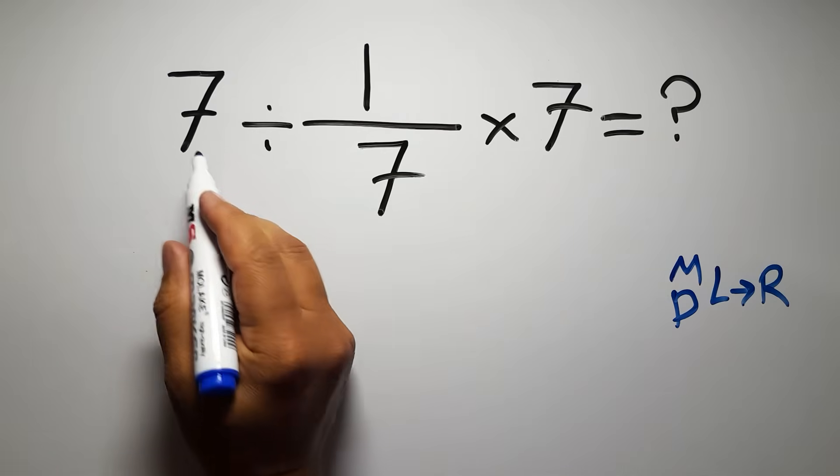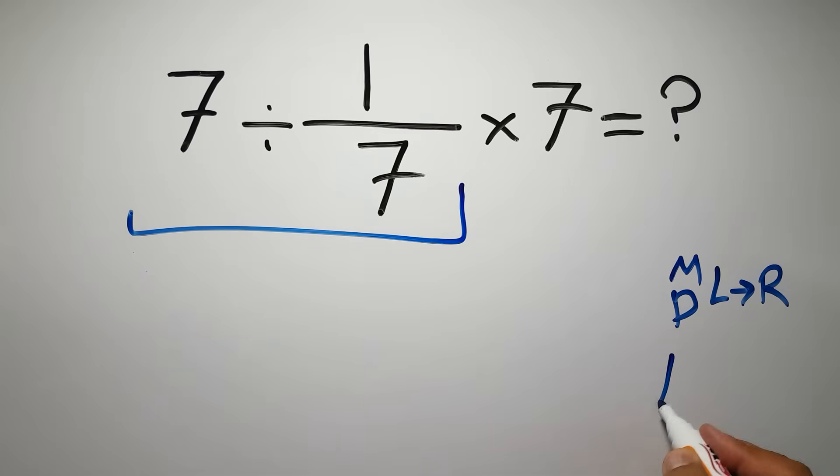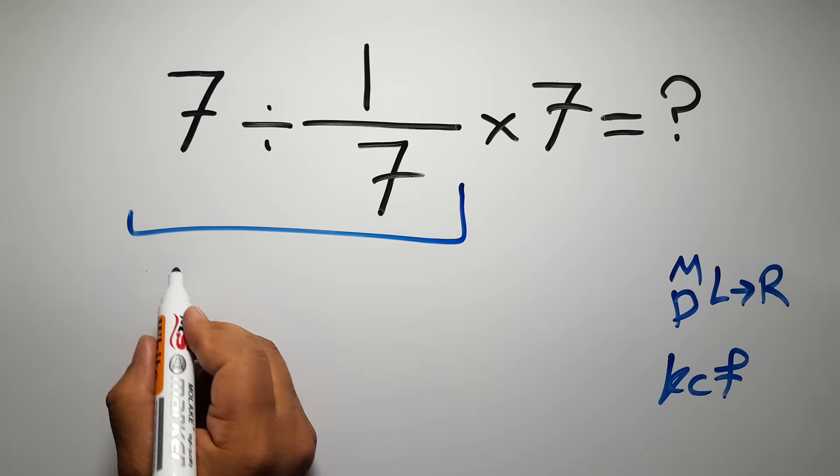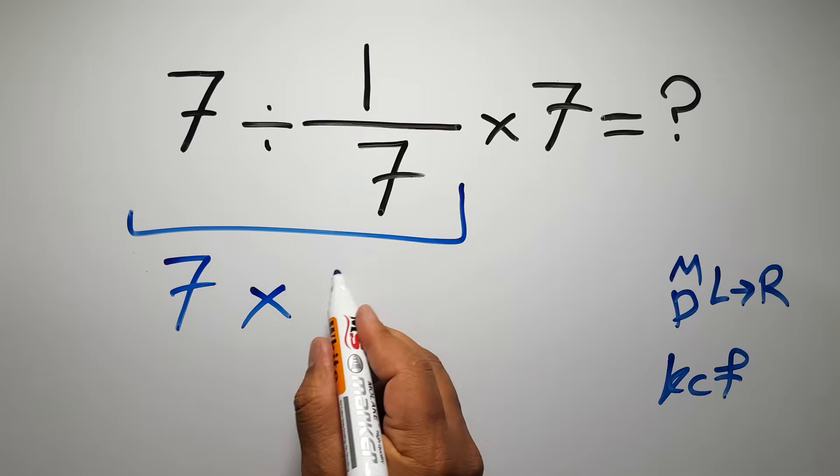So first, 7 divided by 1 over 7. According to the KCF rule, K stands for keep, C stands for change, and F stands for flip. We can write keep the first fraction, change division to multiplication, and flip the second fraction.